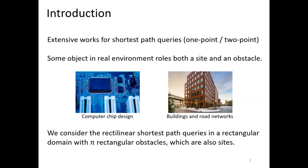But different from the point, some obstacle objects are targets in real environments, like chips on a board, or buildings in a city. We make the path between power and chip avoiding another chip. Also, sometimes we go to the entrance of a building. From this motivation, we consider the problem where obstacles make the polygonal domain with their sides.